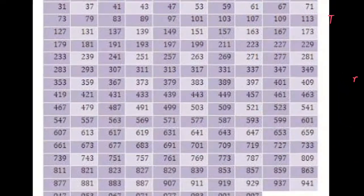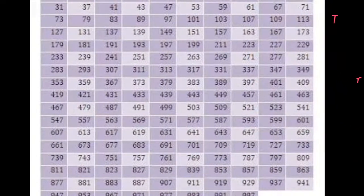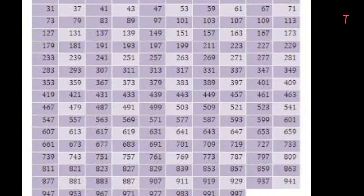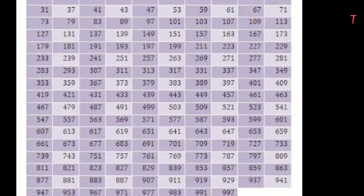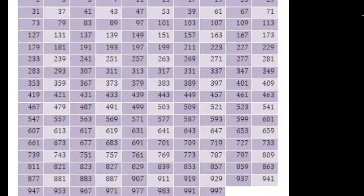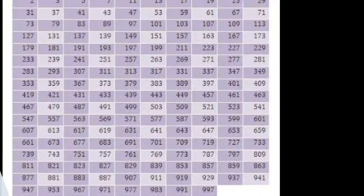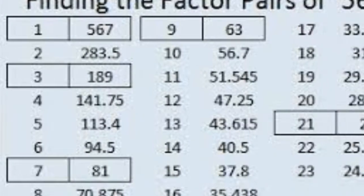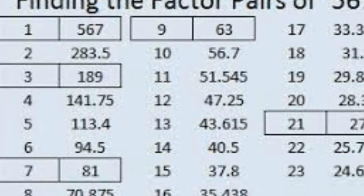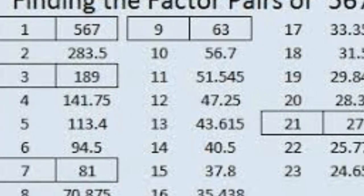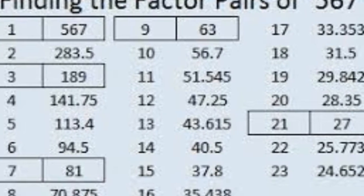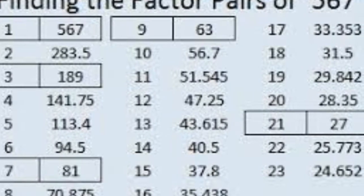When working with prime numbers, it's important that students know the difference between factors and multiples. These two terms are easily confused by learners, so it's important to emphasize that factors are numbers that can be divided evenly into the number being observed, while multiples are the results of multiplying that number by another.